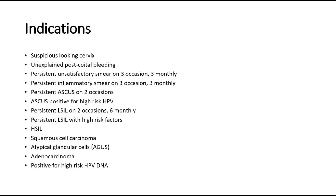Persistent ASCUS — atypical squamous cells of undetermined significance — or ASCUS positive for high-risk HPV, or persistent low-grade squamous intraepithelial lesions. HSIL is the high-grade squamous intraepithelial lesion, which is CIN 2 and 3. Other indications include squamous cell carcinoma of the cervix, atypical glandular cells, adenocarcinoma, and those who are positive for high-risk HPV DNA.